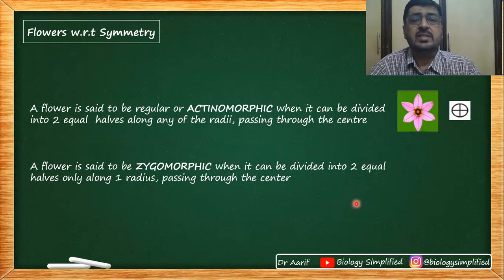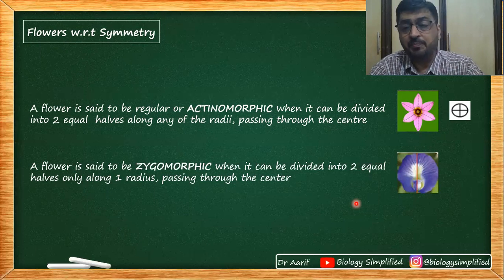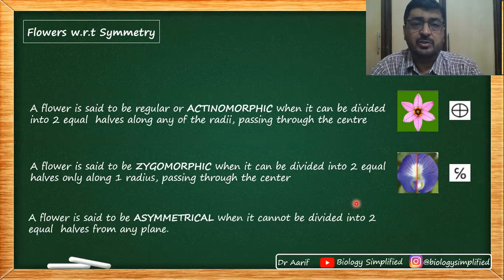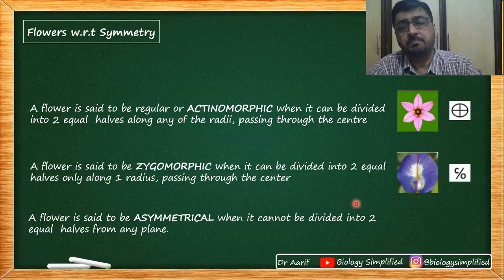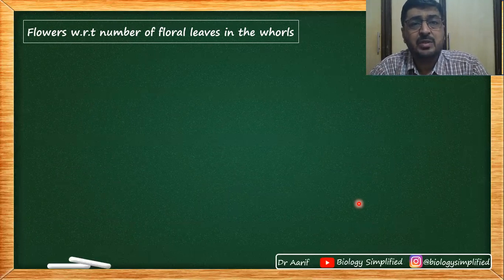A zygomorphic flower has only one line of symmetry. The third type is asymmetrical — when there is no symmetry present and no equal halves can be formed from any axis. So with respect to symmetry, a flower is either actinomorphic, zygomorphic, or asymmetrical. These terms are important when describing flowers and plants.